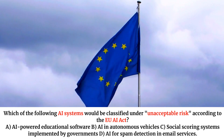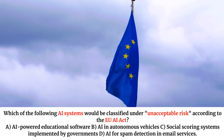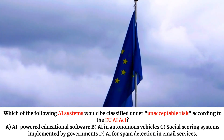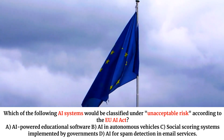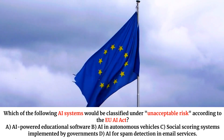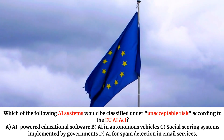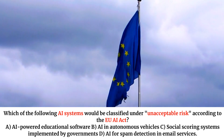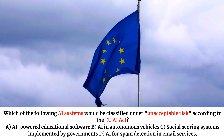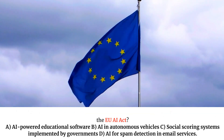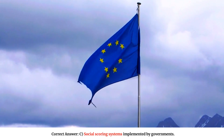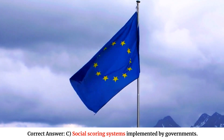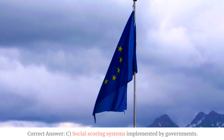Which of the following AI systems would be classified under unacceptable risk according to the EU AI Act? A. AI-powered educational software. B. AI in autonomous vehicles. C. Social scoring systems implemented by governments. D. AI for spam detection in email services. Correct answer: C. Social scoring systems implemented by governments.